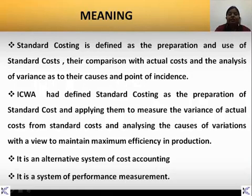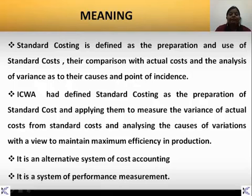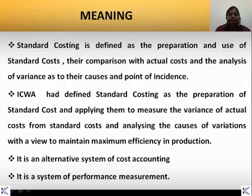Standard costing is defined as the preparation and use of standard cost, their comparison with actual cost, and the analysis of variance as to their causes and point of incidence. ICWI has defined standard costing as the preparation of standard cost and applying them to measure the variance of actual cost from standard cost and analyzing the causes of variations with a view to maintain maximum efficiency in production.